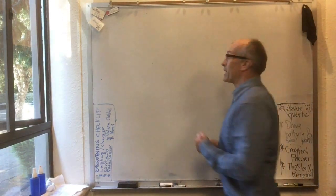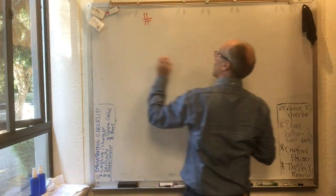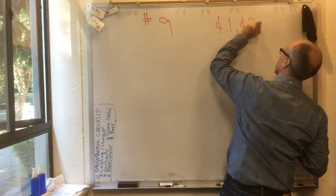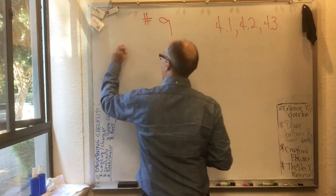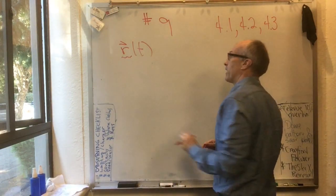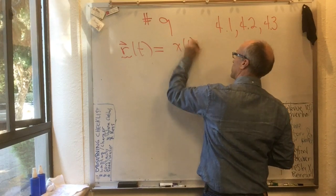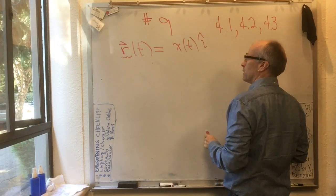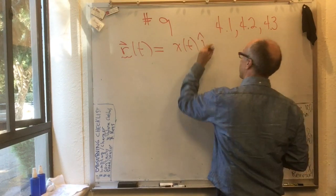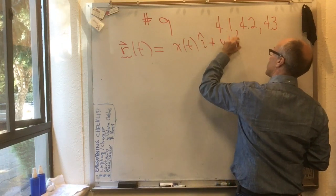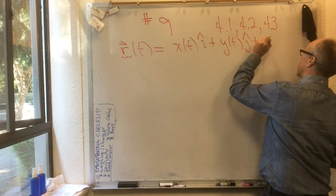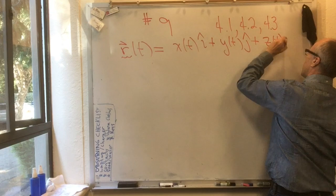This is flipped mini lecture number 9, covering sections 4.1, 4.2, and 4.3. We have r of t, the position of a particle at time t, equal to x of t times i-hat plus y of t times j-hat, and if you're in 3D, it's plus z of t times k-hat.